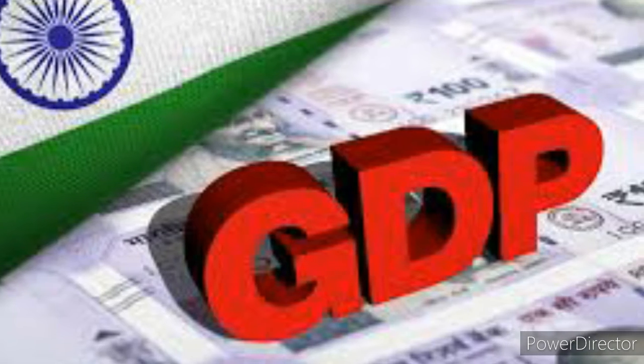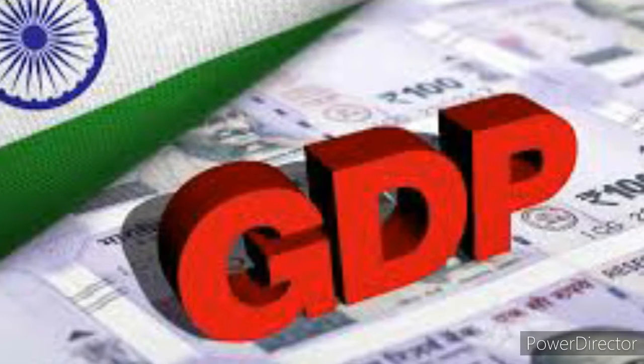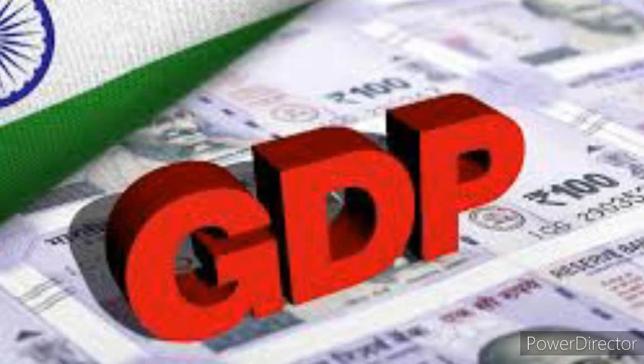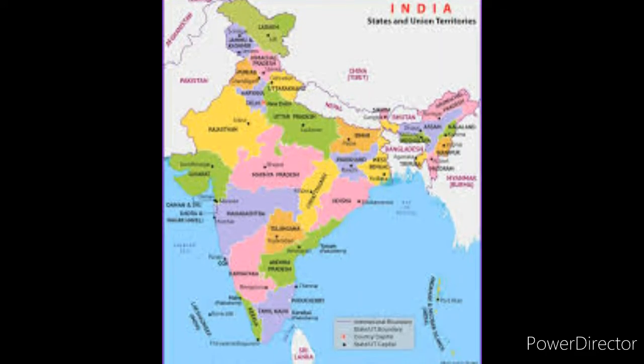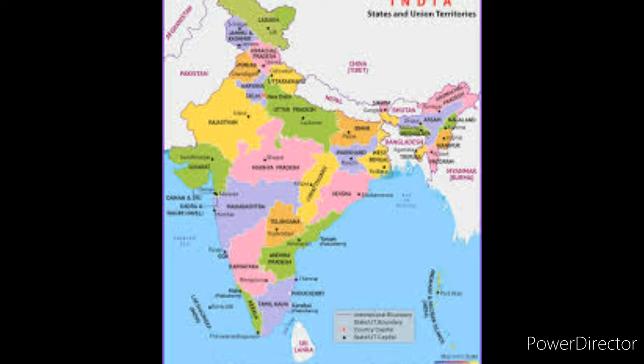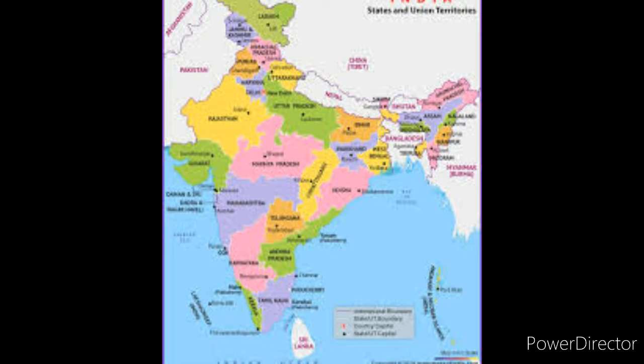Japan languages include Japanese, Ryukyuan, Ainu, Hachijo, Neo, Oro, Korean, Chinese, and various foreign languages. India's GDP is 2.72 trillion US dollars, GDP growth rate is 6.7%.